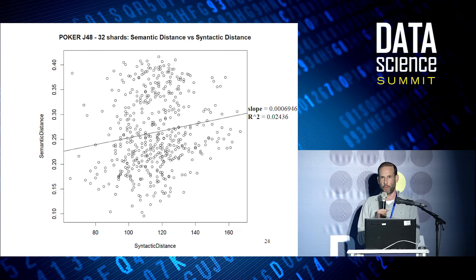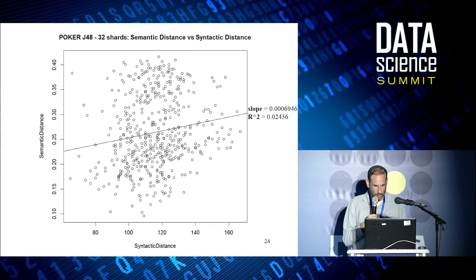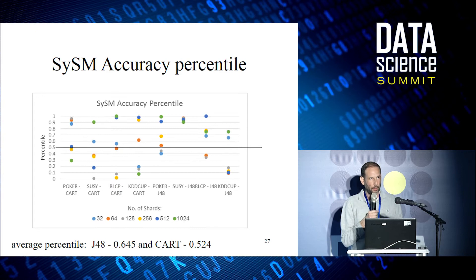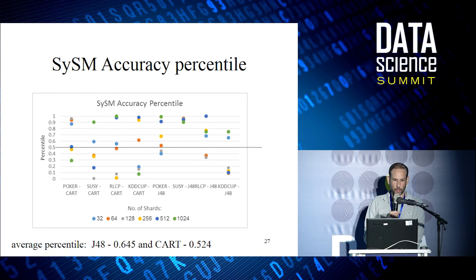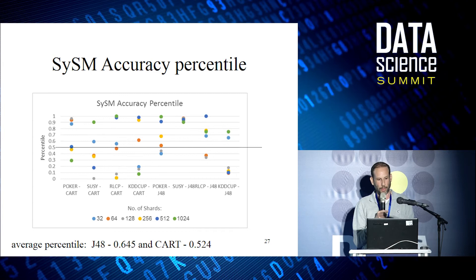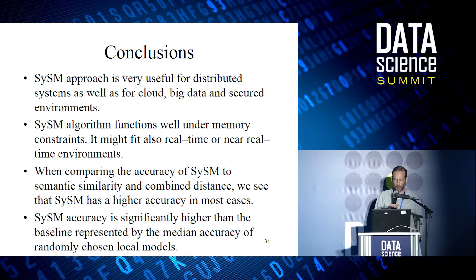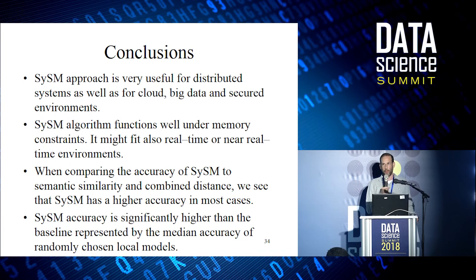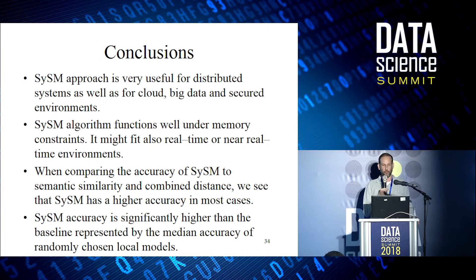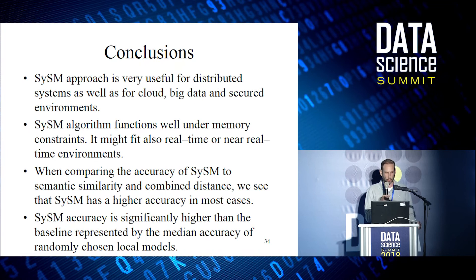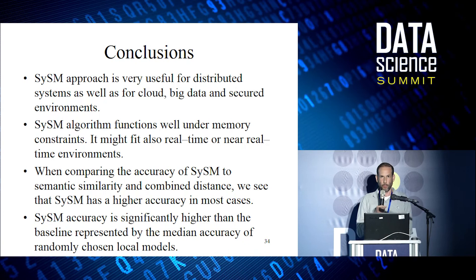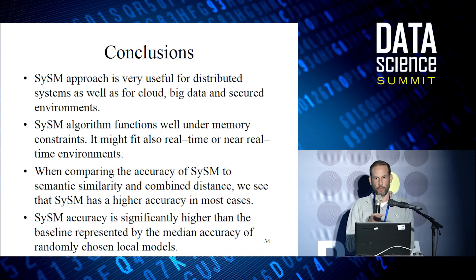Another question we investigated is whether there is a correlation between the semantic and syntactic perspectives. As you can see, there is no correlation since the R-squared value is quite low. We also tested accuracy in comparison to the half-accuracy percentile and confirmed we are above it. In conclusion, the CISEM approach is very useful for distributed systems. It can also be used in secure environments since we don't need to share data — only the model itself. It functions well under memory constraints and achieves good results both in accuracy and time performance.